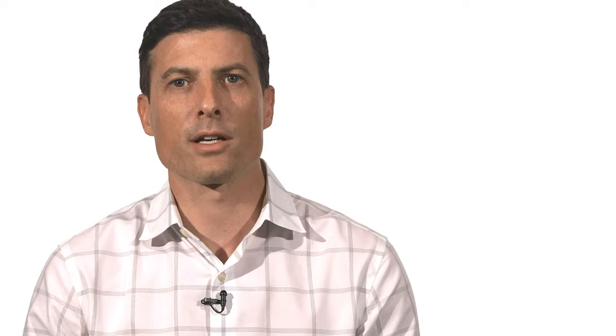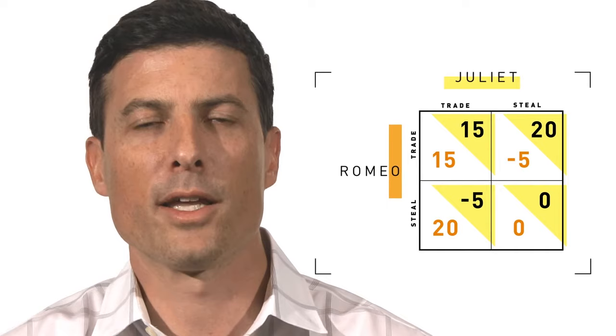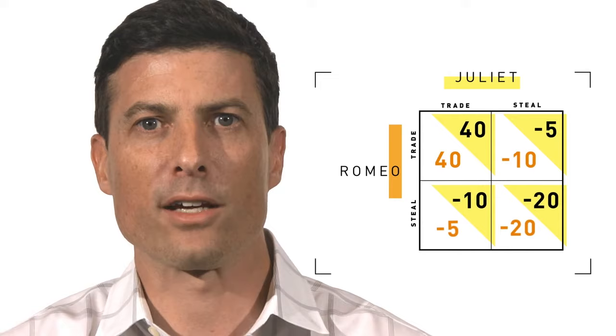In constructing a game theory matrix, it's often useful to include in the payoffs everything the players care about. Payoffs can include differences in how much players value a particular outcome and how much they care about each other. Economists are often caricatured as thinking that people are selfish and only care about maximizing wealth, but this isn't necessarily true. Economics can be thought of as the science of scarcity, and game theory as modeling how diverse agents achieve goals in a world of scarce resources and limited altruism. If Odin and Loki are lovers like Romeo and Juliet, they may take pleasure in promoting each other's welfare — once we add those psychological benefits, peaceful exchange rather than theft may be their best option. The point of game theoretic models is to simplify real life and see how rational agents make strategic choices, but it's crucial not to assume that flesh and blood people, with the rich array of emotions and experiences they bring to the table, will always conform to the models we create.